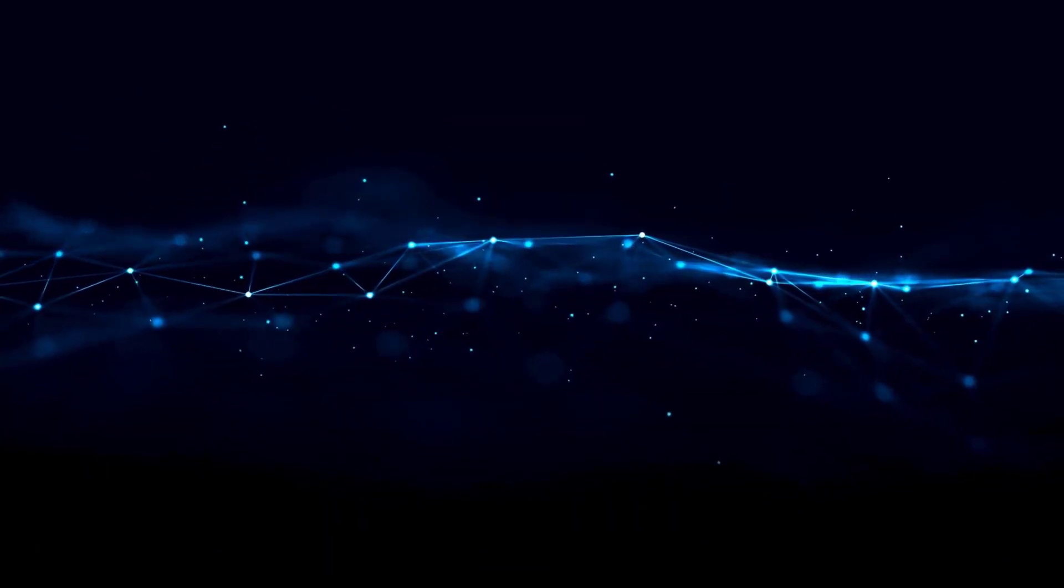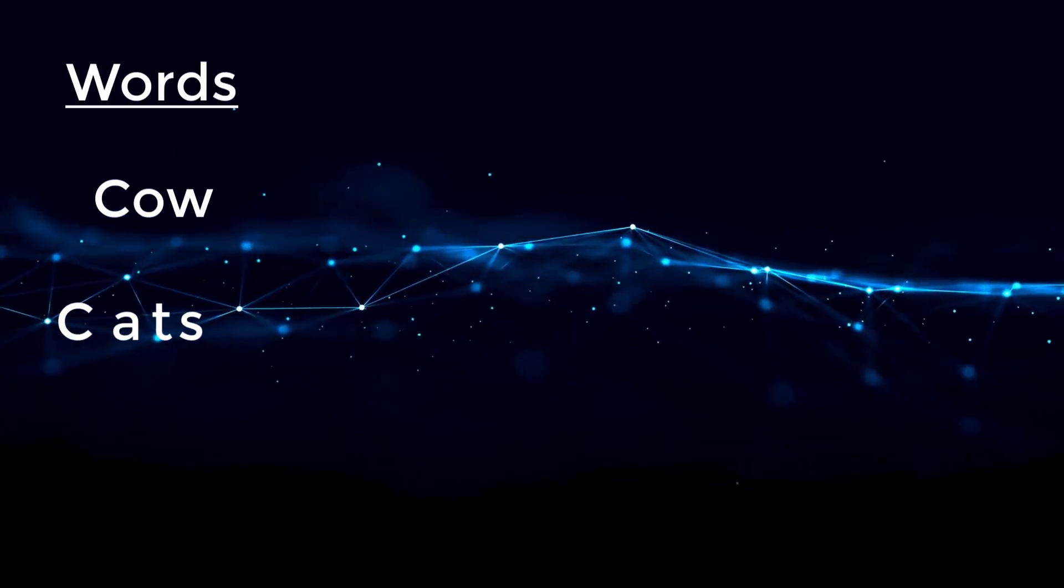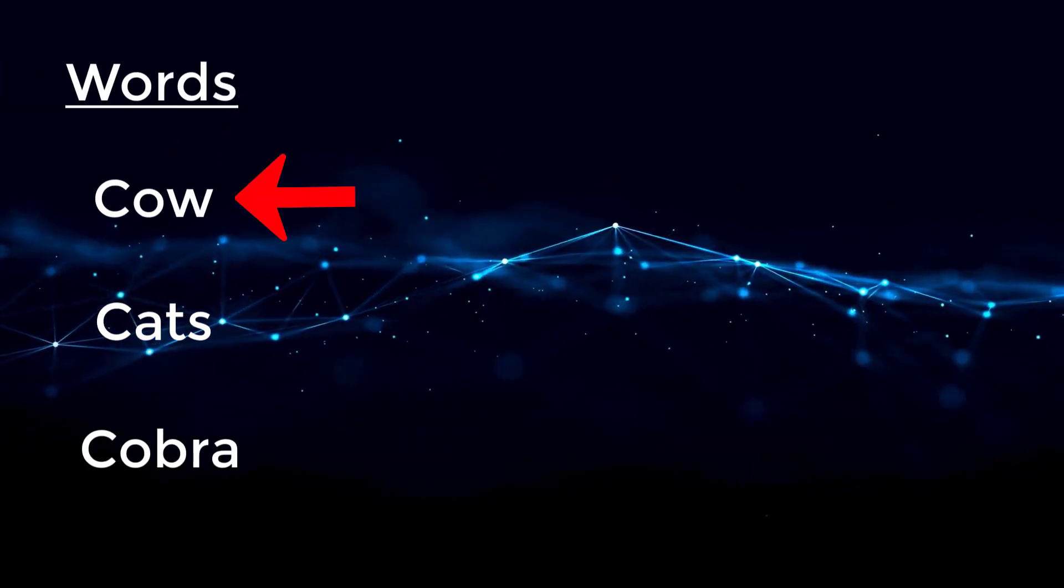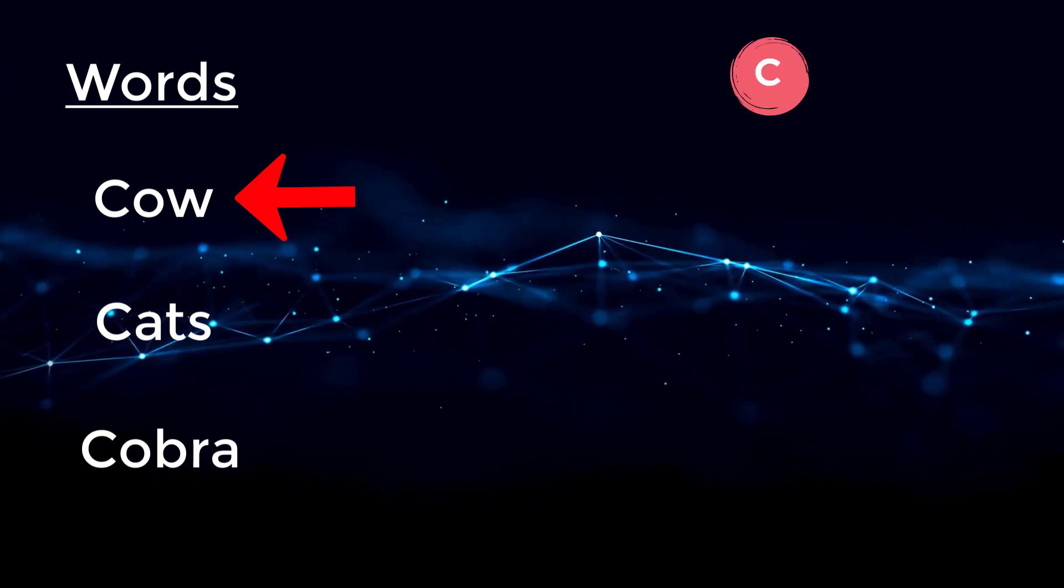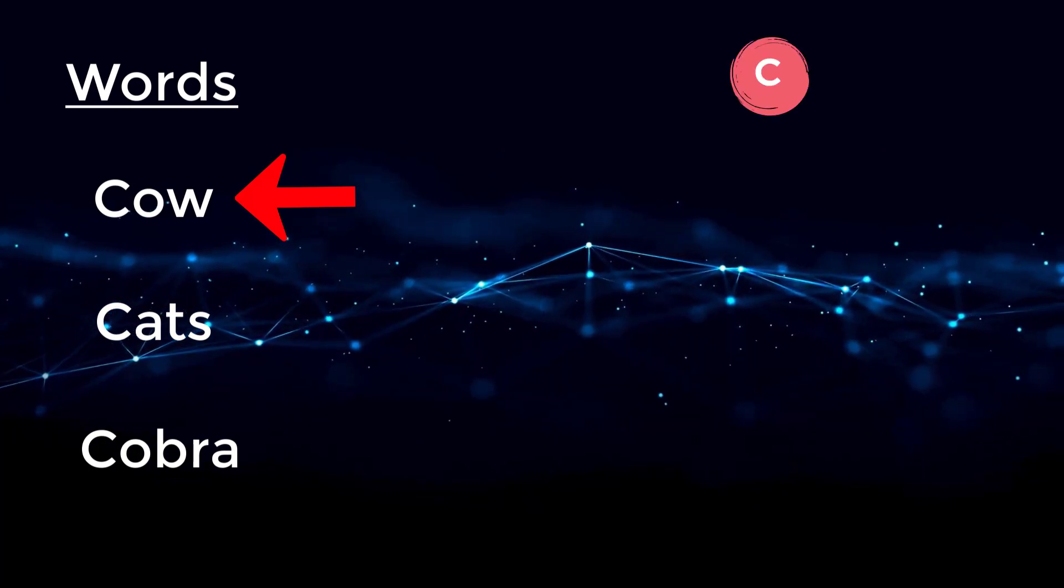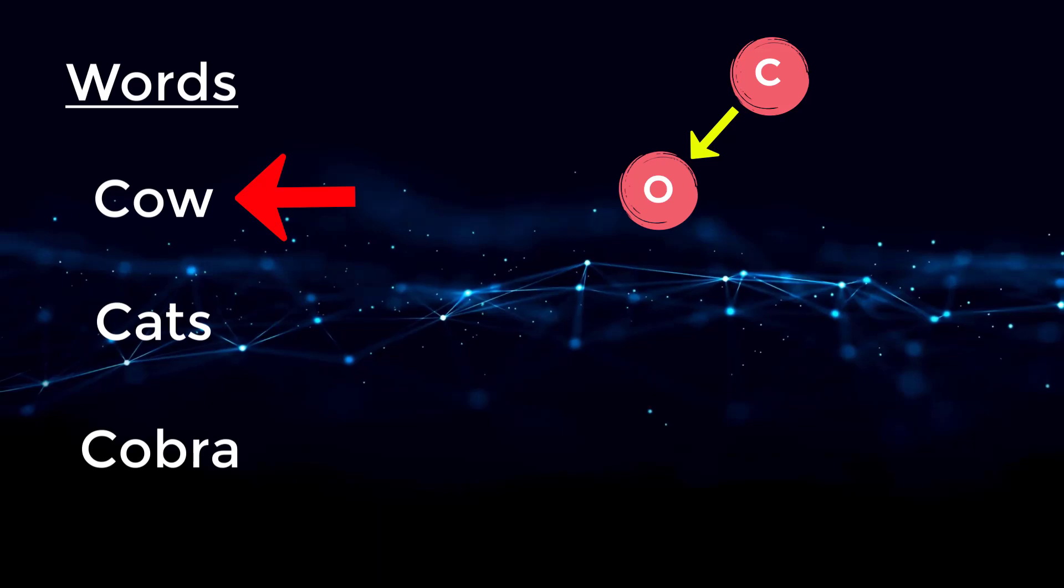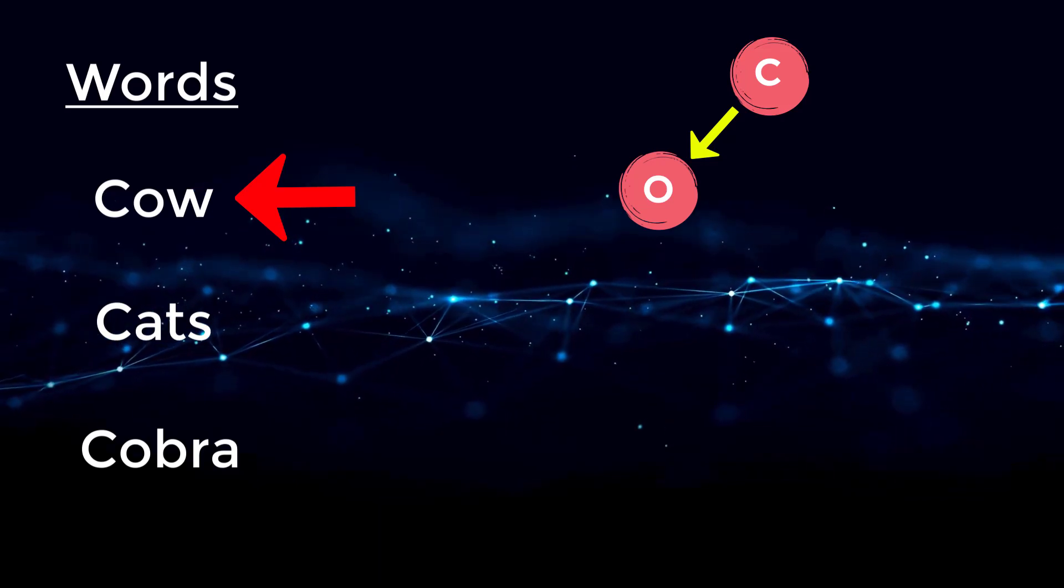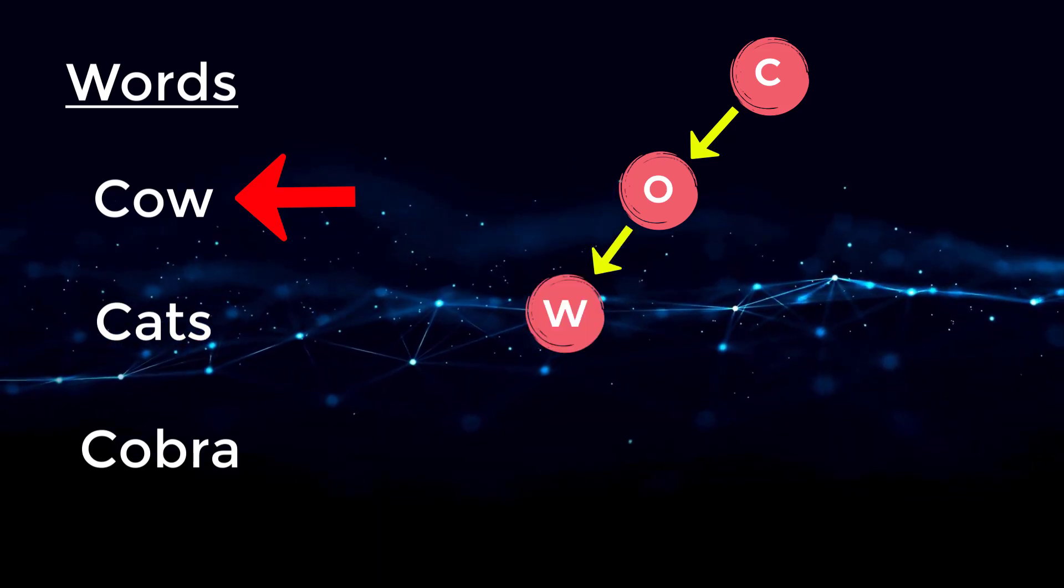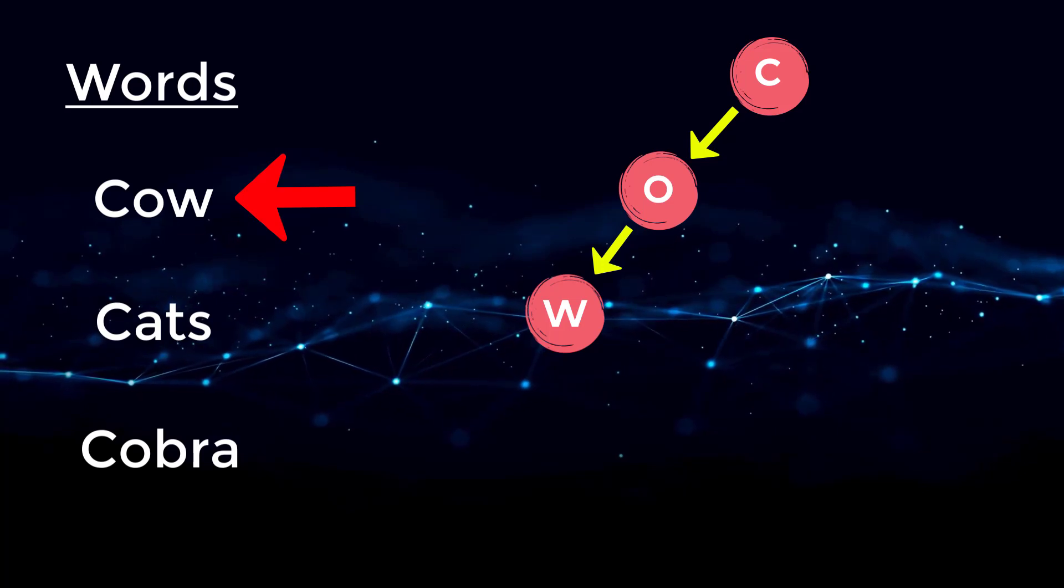So for example, let's say we were to insert the words cow, cats, and cobra inside of our trie. If we wanted to insert cow, we would first create the C node, since it doesn't exist yet. Then we would create O node, which is connected to C. Then create a W node, which is connected to O.